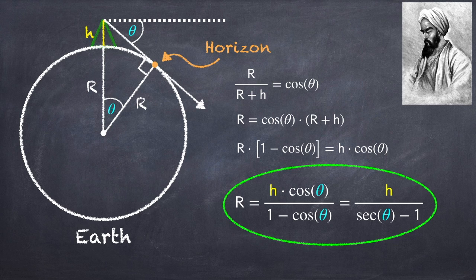In this final step, I've just divided top and bottom by cosine theta, and used the fact that 1 over cosine theta is secant theta.